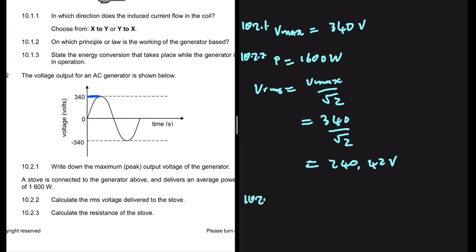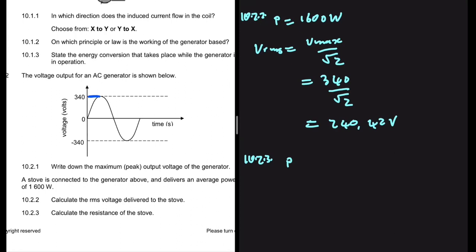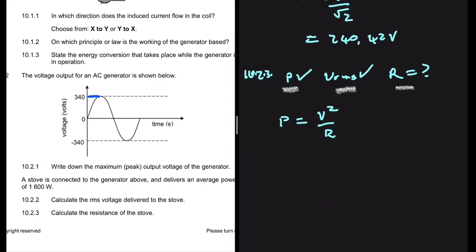10.2.3: Calculate the resistance of the stove. We have the power, we have V_rms, we are looking for R. Which formula connects these three variables? That is power equals V squared divided by R.